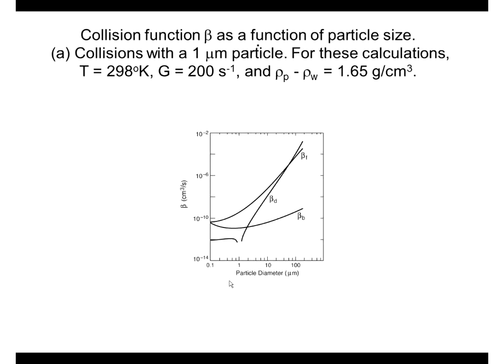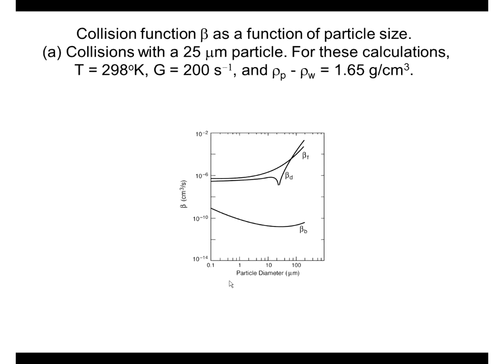This shows the beta for Brownian motion, differential settling, and fluid shear for a collision between a particle of one micron and other sized particles. Brownian motion tends to be small for these particular conditions. Fluid shear depends on the fluid shear rate and the curve moves up and down accordingly. Differential settling is almost always important for larger particles. For a 25-micron particle, Brownian motion is always small, and differential settling and fluid shear are the dominant mechanisms.